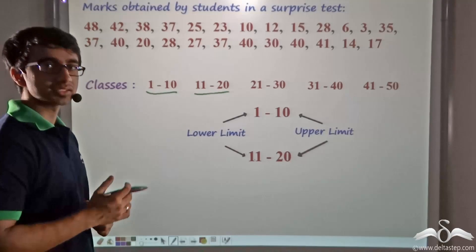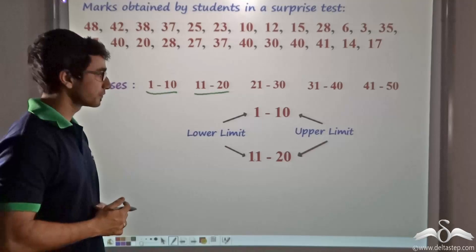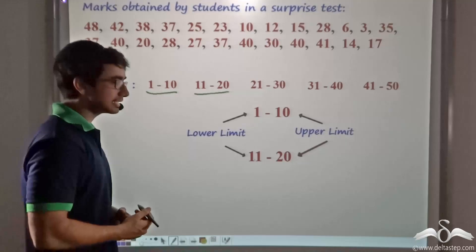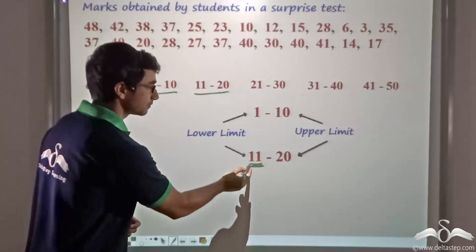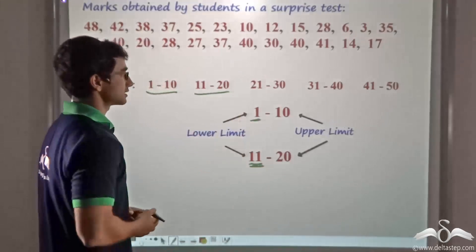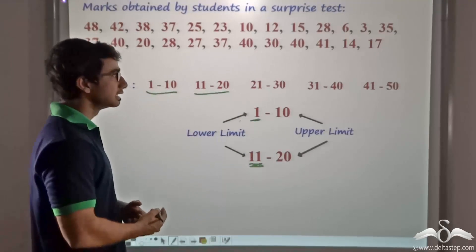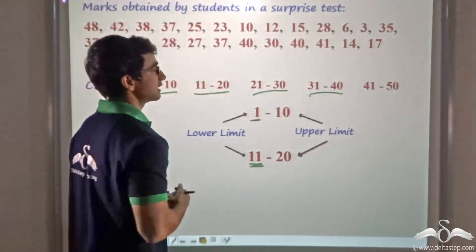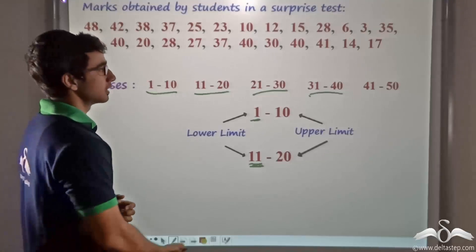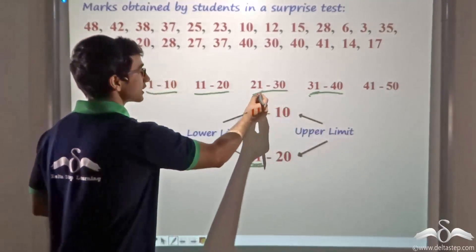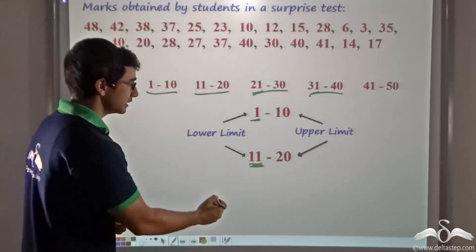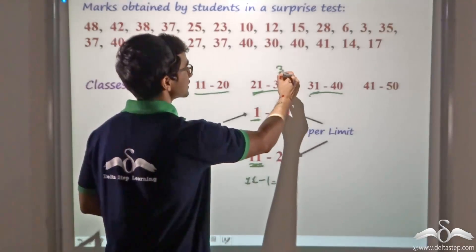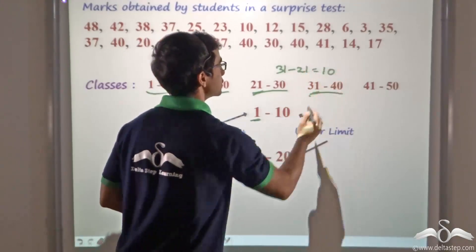Another term is defined when it comes to classes — the class size or class width. How can we define the class size or class width? It is defined as the lower class limit minus the lower class limit of the previous class. So it will be 11 minus 1, which is equal to 10, or in this case 31 minus 21, which is equal to 10.